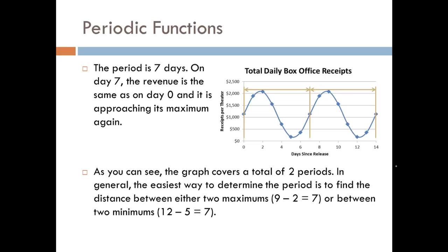Usually the easiest way to determine a period is by looking at how far apart the maximums are located from each other, or you could do the same thing with the minimums. So if we look in this case, we have maximum values of a little over two thousand dollars per theater, roughly on the second day and then on the ninth day. So nine minus two is seven.